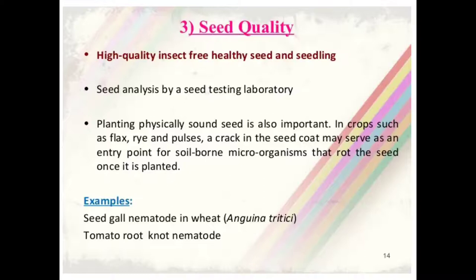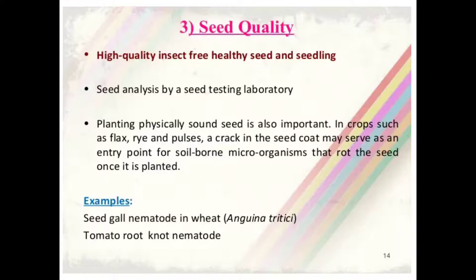The third important measure against insect pest control in organic farming is the use of quality seed. High quality, insect-free, healthy seed and seedlings are important for the prevention of insect pests and diseases. Seed analysis by a seed testing laboratory is also essential to prevent further spread of diseases and pests. Planting physically sound seed is important in crops such as flax, rye and pulses. A crack in the seed coat may serve as an entry point for soil-borne microorganisms. Examples include seed gall nematode in wheat and tomato root knot nematode.